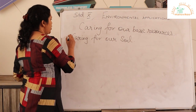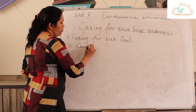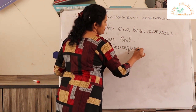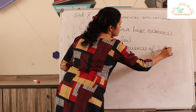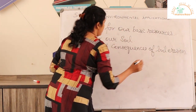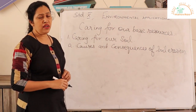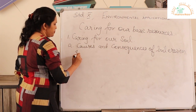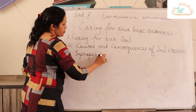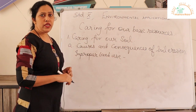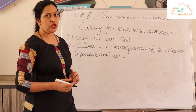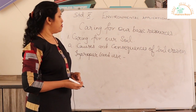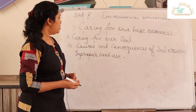Under this we are doing the causes and consequences of soil erosion. There are many causes, natural and man-made, but the most important ones in the syllabus are: first, improper land use. Today, because of overpopulation, a lot of land is being used for settlements, constructions, roads, railways, and building projects. So agricultural land is being used for other purposes, which causes soil erosion.